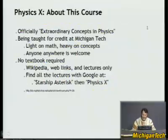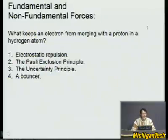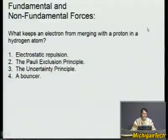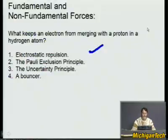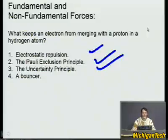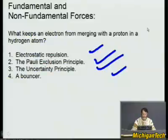Let's get to one of the famous questions I like to ask to keep people on their toes. What keeps an electron from merging with a proton in a hydrogen atom? Why don't they just come together? One has positive charge, one has negative charge — shouldn't they be friends? Is it electrostatic repulsion? Is it the Pauli exclusion principle? Is it the uncertainty principle, or is some bouncer involved? Think about it. Ask your friends. See which one your dog sniffs out.